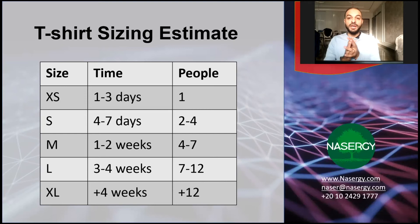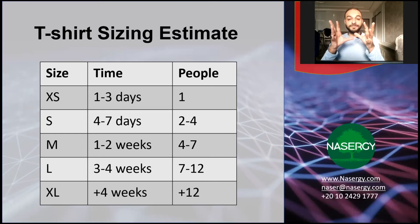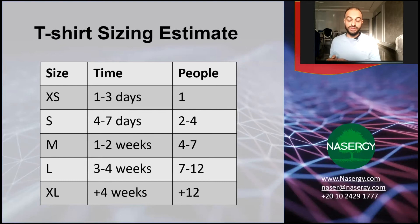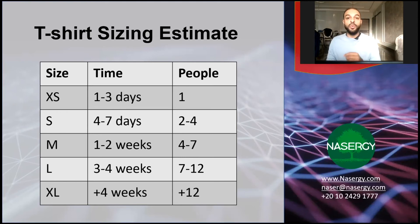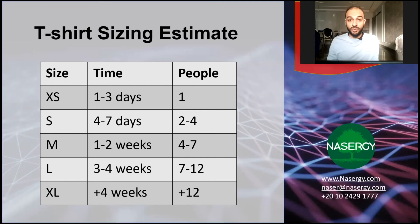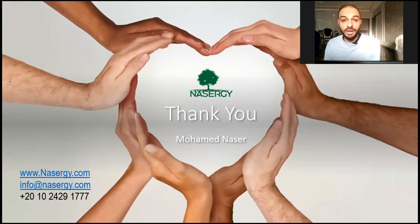Of course, you can change these numbers and define your own strategy, but you need to agree on it inside your organization with your team. Once you have your t-shirt sizing strategy in place, you start estimating activities with your team. At the end of the estimation, you'll have user stories sorted by size, so you can know the total number of days and the total number of people required to do the work.